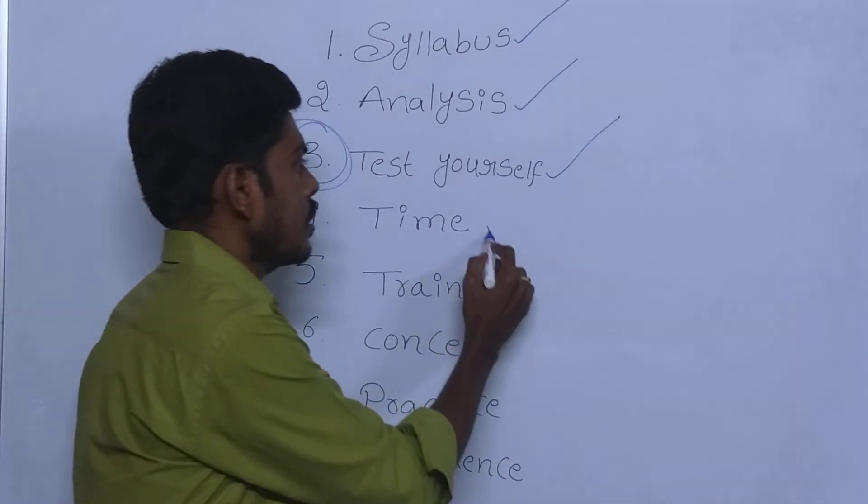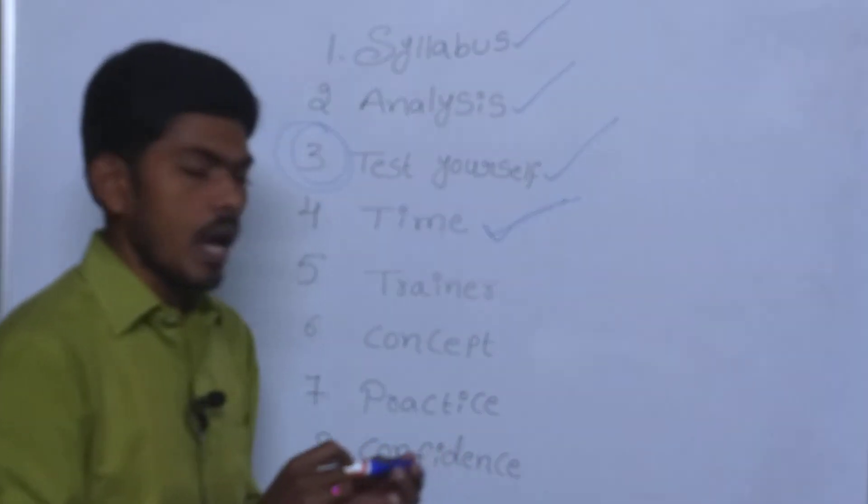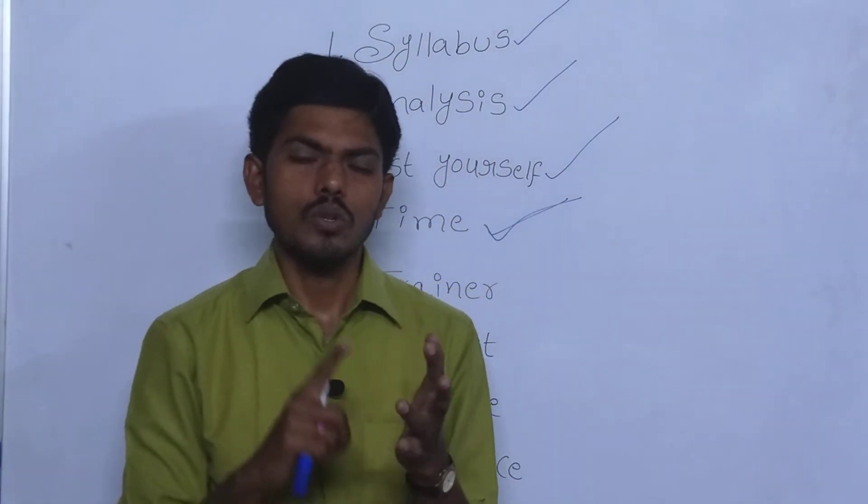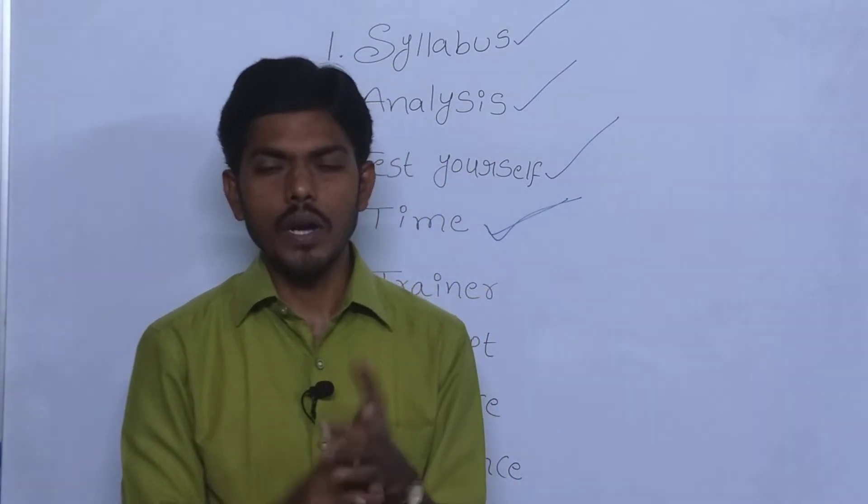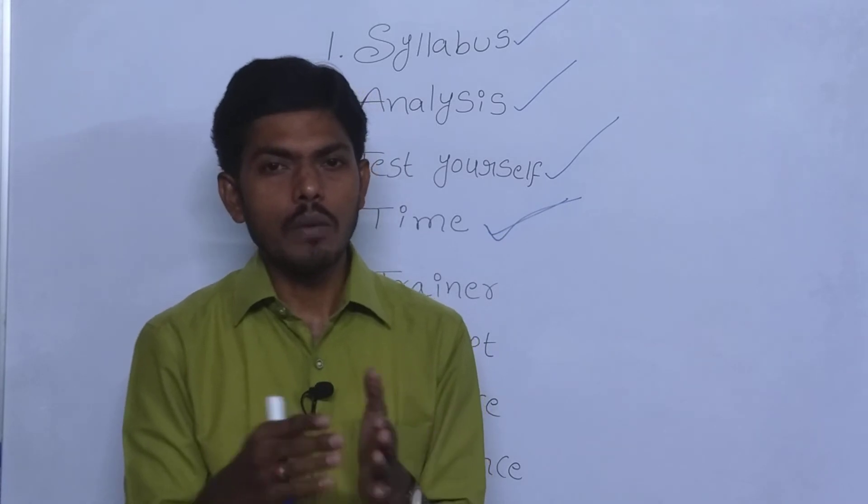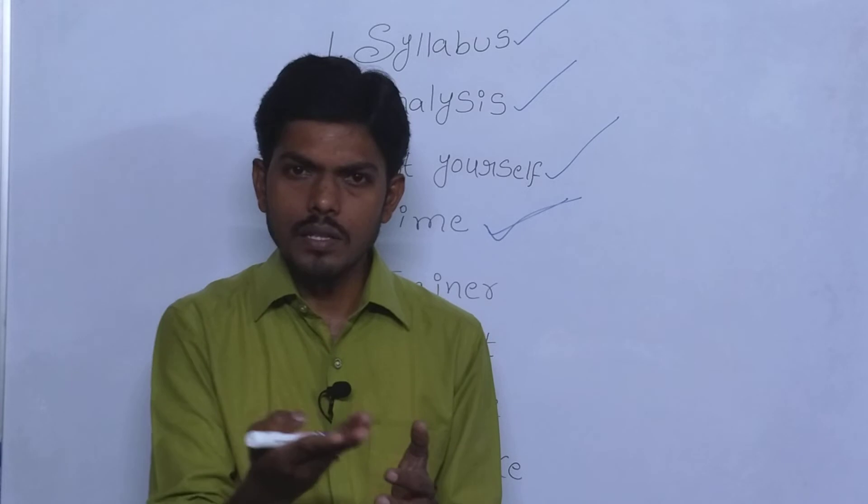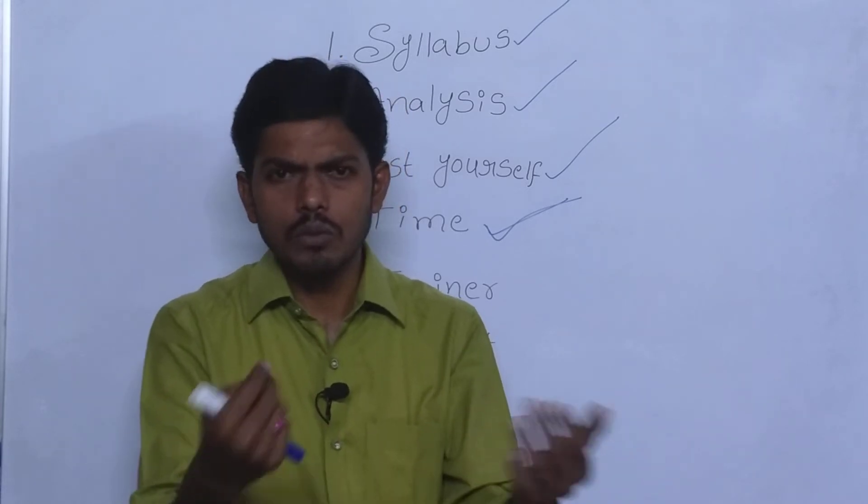Next one. Time. How much time we have? One month, two months, six months, one year. Based on our time, we can do preparation easily. If you have six months, it becomes very easy to get good marks in English.